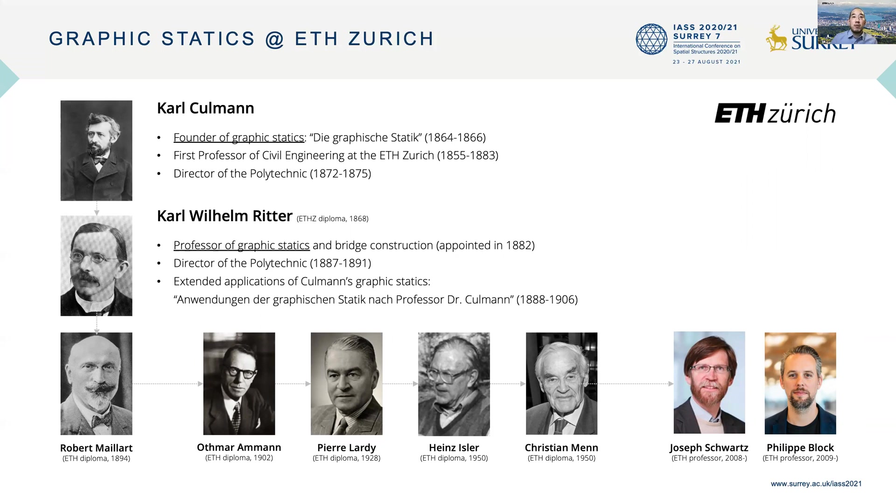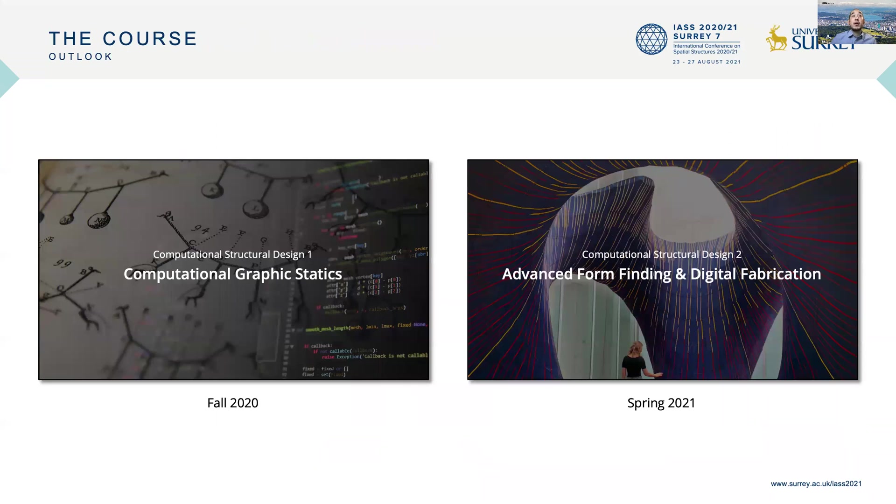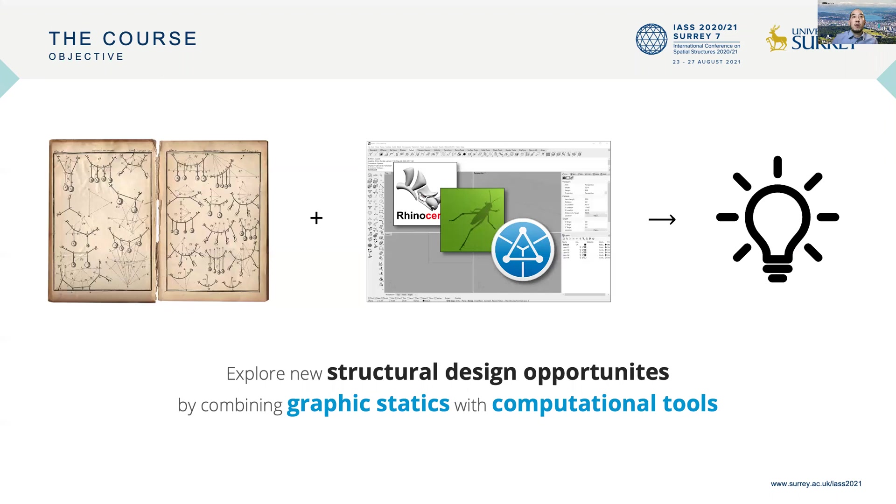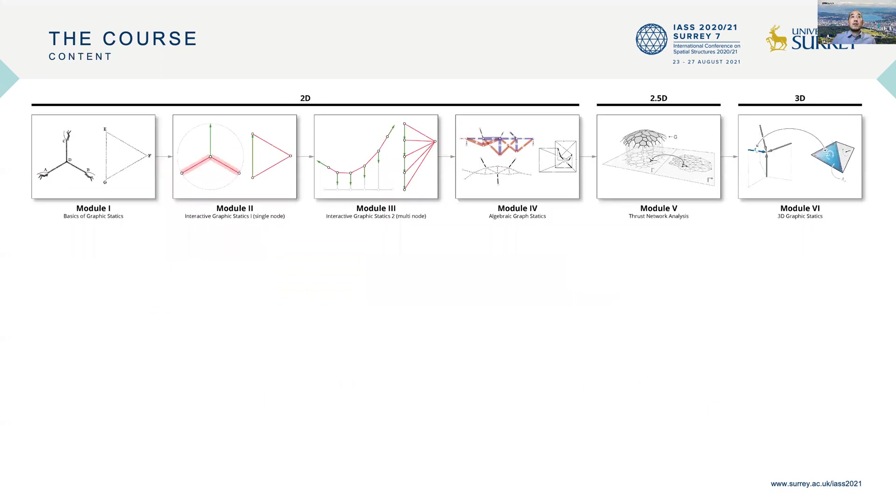Last year, the Block Research Group had this fortunate opportunity to develop two new courses: Computational Structural Design 1 and Computational Structural Design 2. The first of those courses focused on computational graphic statics. The entire objective of this course was to explore new structural design opportunities by combining graphic statics with computational tools. The course was divided into six modules, gradually building up in complexity and depth from simple 2D structures to more complex 3D spatial structures.